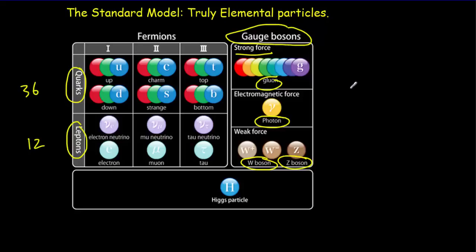It's never been discovered, but there's also thought to be a graviton, which is responsible for the gravitational force. And then all the hubbub recently has been about the Higgs particle, or Higgs boson. It's thought to be responsible for giving all the other particles their mass.